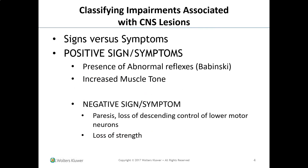There are positive signs and negative signs. Positive signs include the presence of abnormal reflexes such as the Babinski, or increased muscle tone. A negative sign would be paresis, loss of descending control of lower motor neurons, or loss of strength. We can use both to our advantage in rehab. Knowing that someone has increased muscle tone means we might be able to use that to our advantage, or knowing about the Babinski reflex means we can either avoid it or produce it to get the desired effect.